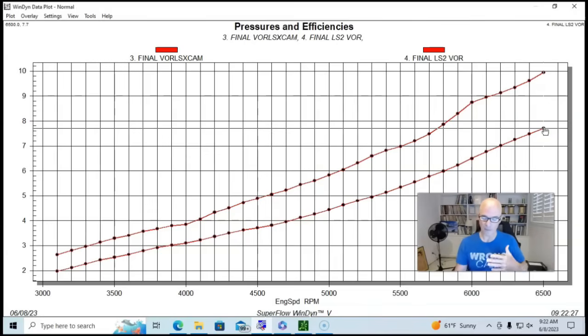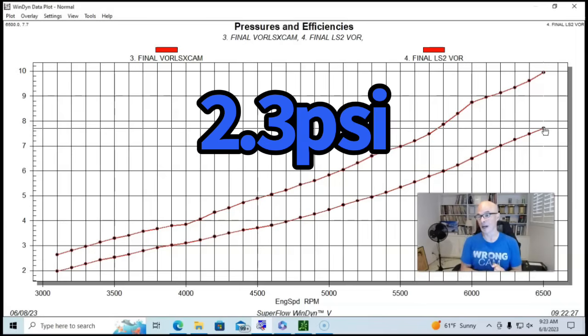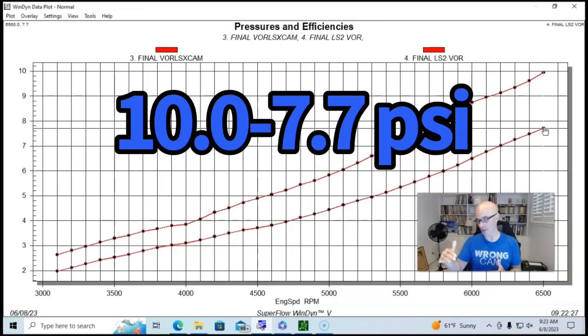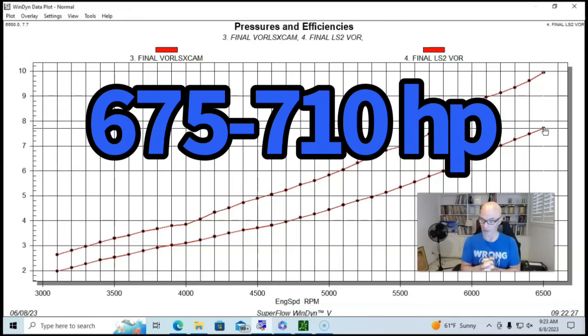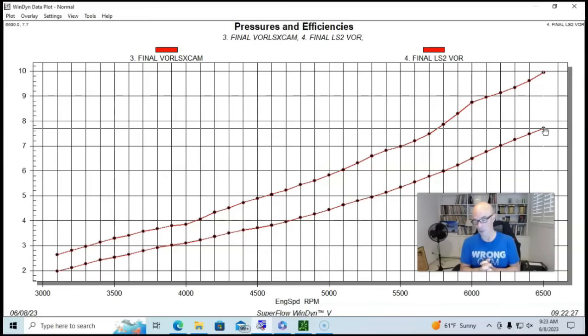Now let's take a look and see what happens with the same blower and pulley on the more powerful LS2. Our LS2 numbers are down below the LS1. It started out at just 2 psi at 3,100 rpm, down six tenths of a pound from 2.6 down to 2.0, and rose only to a peak boost level of 7.7 pounds at 6,500 rpm. So going from the LS1 with the cam to the LS2 with the cam, we dropped boost by 2.3 psi from 10 pounds down to 7.7 psi. We went from 675 horsepower to 710 horsepower, so we went up about 45 horsepower.